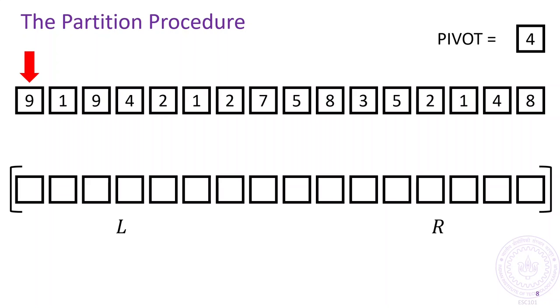We start scanning the original array from left to right. If we come across an element that is strictly larger than the pivot, we put it in the rightmost empty spot of the active region and then shrink the active region. If we come across an element strictly smaller than the pivot, we put it in the leftmost empty spot of the active region and shrink the active region.